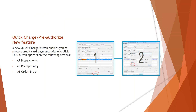Another feature applies to people who are running the Sage payment solution. There is a charge button that enables you to process credit card payments with one click. This is a quick, easy way to process payments while you're in the order entry screen, or even the AR receipt entry or the AR prepayment screen.